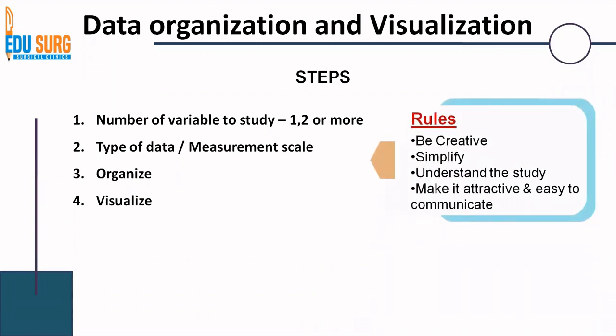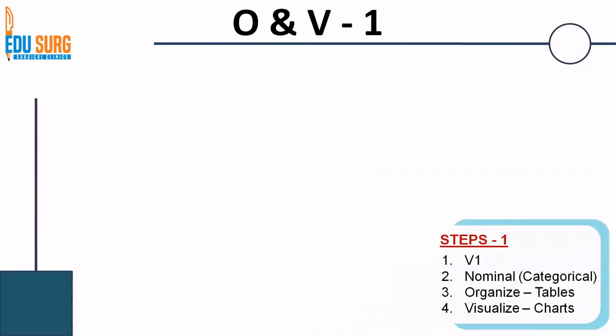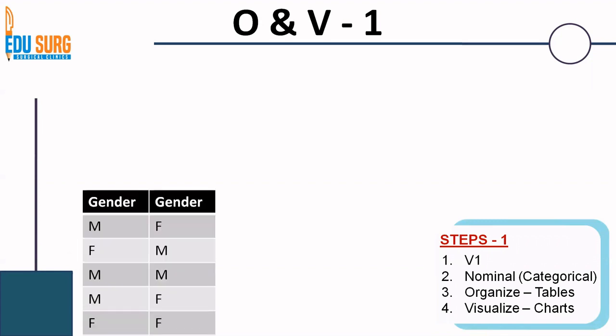As you follow these rules, the aim is to simplify the data so you can understand the study better and communicate it better to your audience by using these organization and visualization techniques. Let us see the first part: we have a single variable to study which is nominal. We will see first how to organize the data using tables and then we will visualize the same data with the help of various charts.